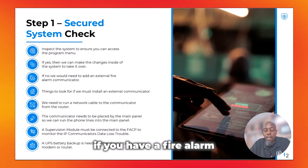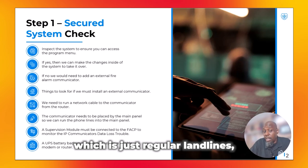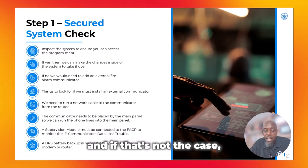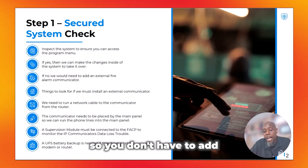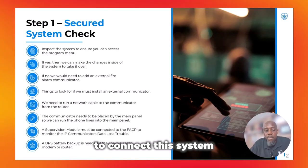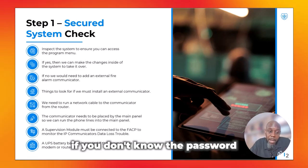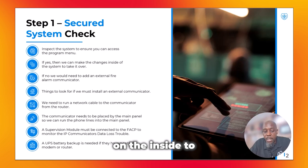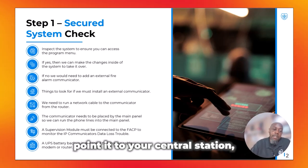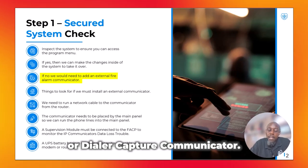This is usually the case if you have a fire alarm system connected on a POTS line, which is just a regular landline. If you can get into the menu, make those program adjustments and you don't have to add any additional equipment to connect the system to your central station. But if you can't get the password and can't get into the menu to change the information and point it to your central station, then you would have to use an IP dialer or dialer capture communicator.